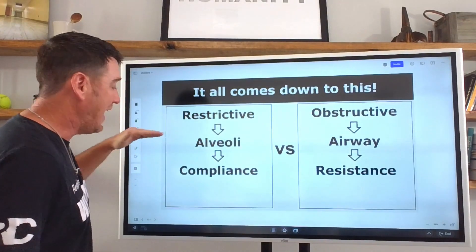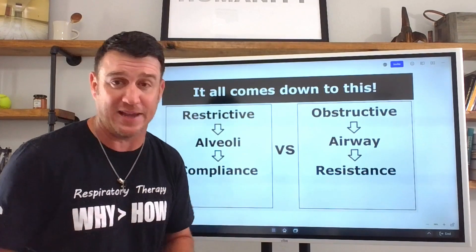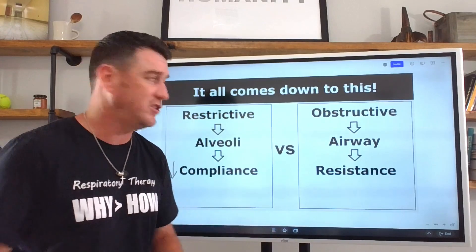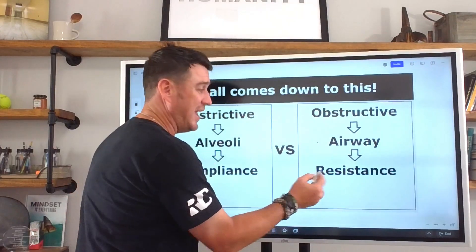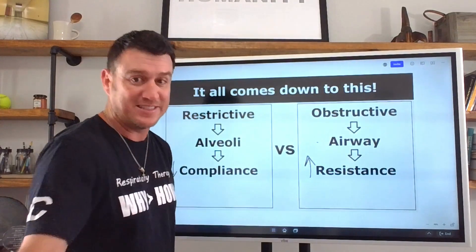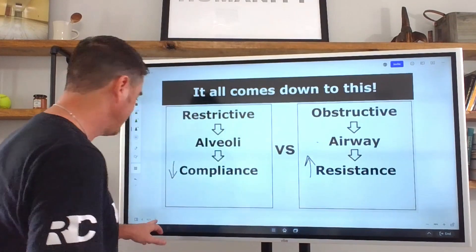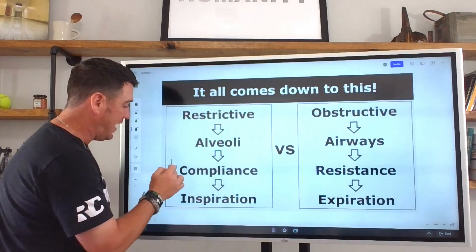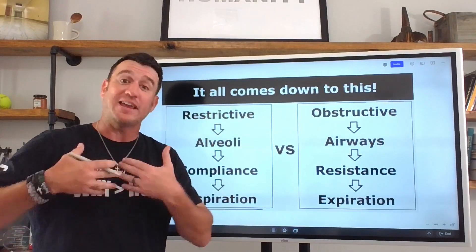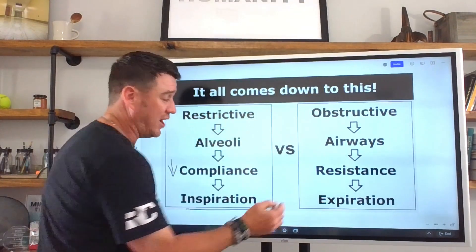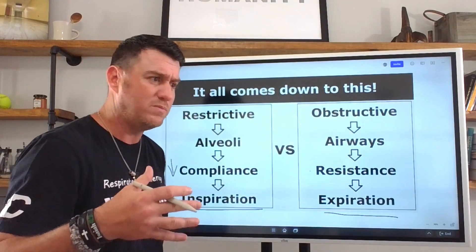Restrictive lung diseases affect the alveolar units, and this causes a decrease in pulmonary compliance — our static compliance, the integrity of the alveolar units. With obstructive diseases, we're talking about the airways, and this increases resistance. A decrease in compliance affects the inspiratory side of the breath — they can't get air in. With obstructive resistance problems, the problem lies on expiration.